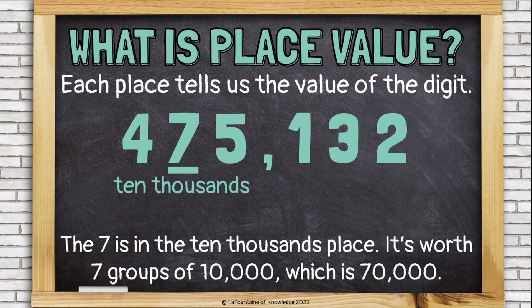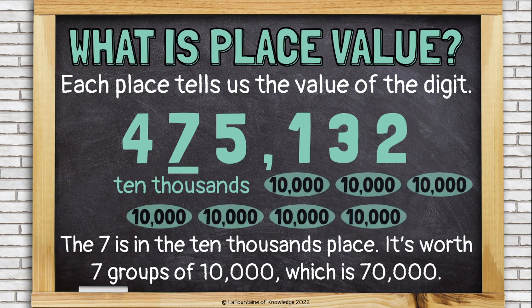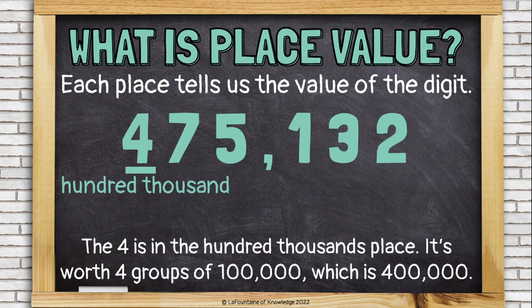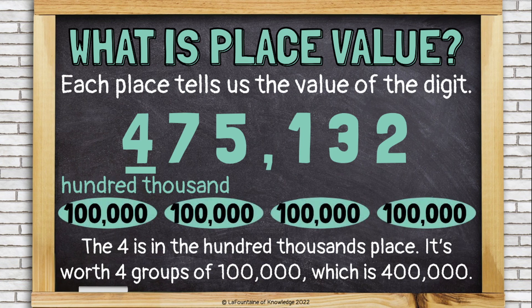The seven is in the ten thousands place. It's worth seven groups of 10,000, which is 70,000. The four is in the hundred thousands place. It's worth four groups of 100,000, which is four hundred thousand.